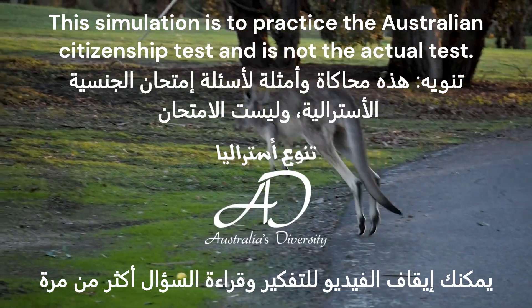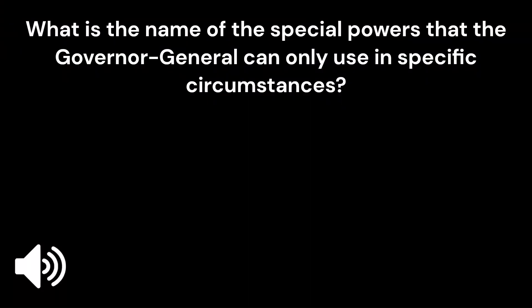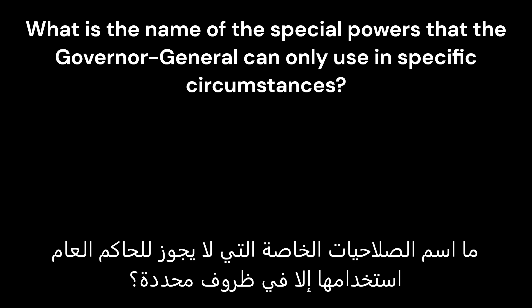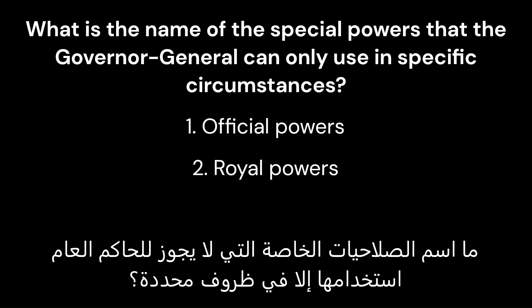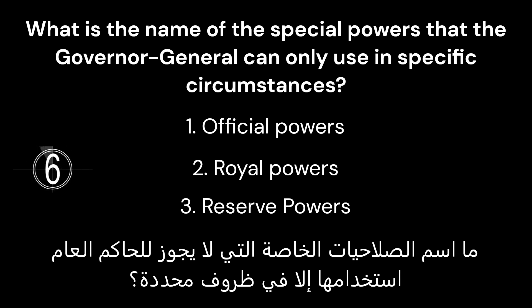Australian citizenship quiz. What is the name of the special powers that the Governor General can only use in specific circumstances? 1. Official powers. 2. Royal powers. 3. Reserve powers. The correct answer is 3. Reserve powers.